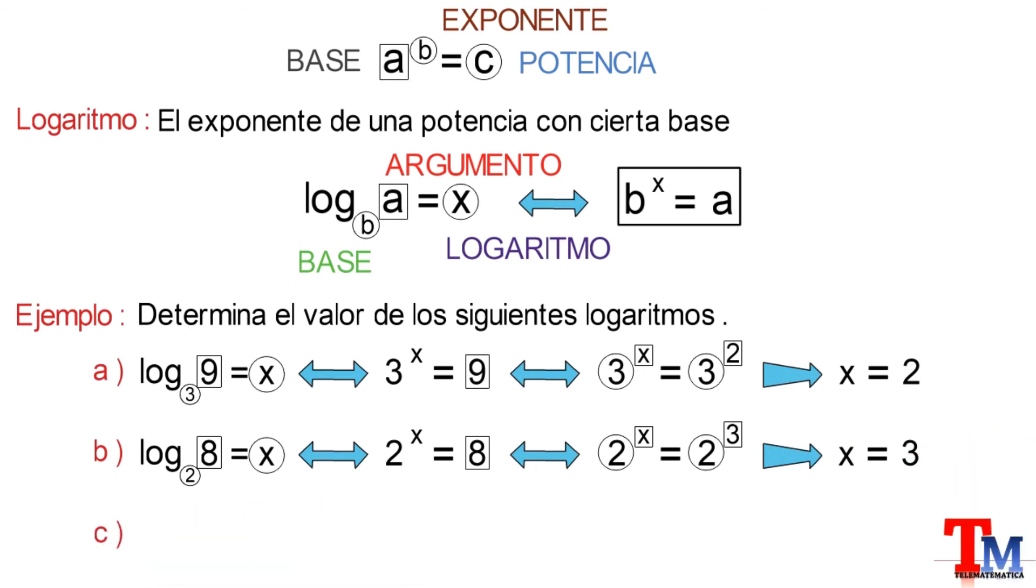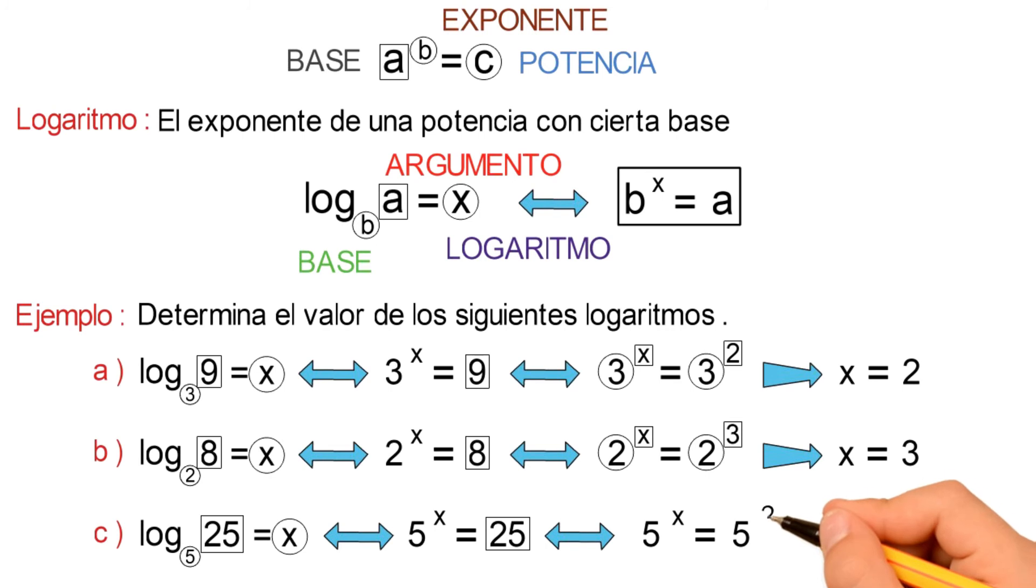Y por último, logaritmo de 25 en base 5. Recordando que el logaritmo se calcula determinando el valor de X utilizando la expresión de la ecuación exponencial, donde la base 5 elevado a la X es igual al argumento 25. Luego, el 25 lo escribimos como una potencia de base 5, y nos quedaría 5 elevado al cuadrado.